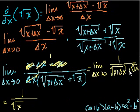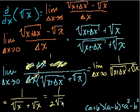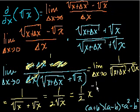This is of course just √x plus √x in the denominator, which equals 1 over 2√x. And that equals ½ x^(−½).